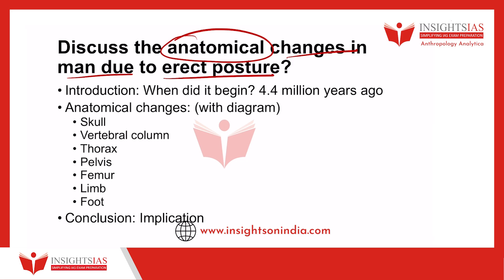As you all know, man is one of the very few species who is habitually bipedal and the only primate to be habitually bipedal. Others can stand on two legs, but they are not habitually bipedal. We are more comfortable standing on two legs. So in that context, what are the various skeletal and structural changes that have happened in the human body to support our erect posture?